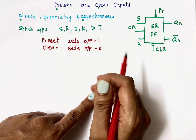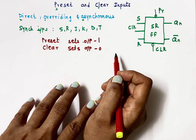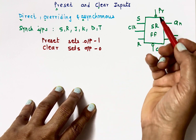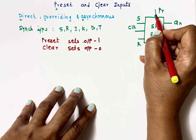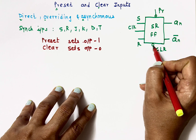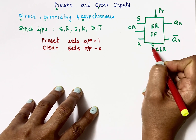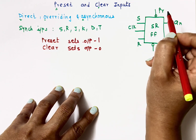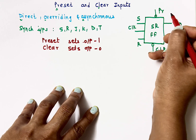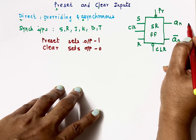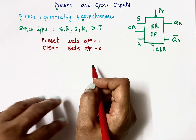Preset and clear inputs are either active-high or active-low. Here, bubbles are shown on the inputs, which indicates they are active-low inputs. Active-low means that if preset receives a 0, then the output becomes 1.